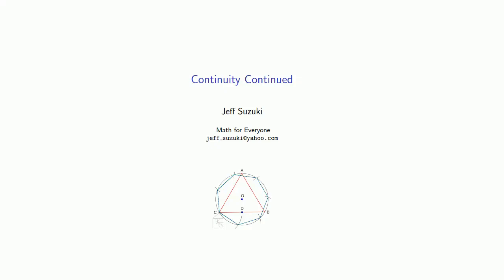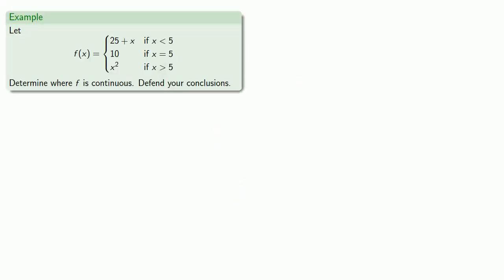So let's check a couple of functions for continuity. Let f of x be some function defined piecewise. And note that we have three different rules depending on where we are. If x is less than 5, we use the rule 25 plus x. If x equals 5, we use the rule 10. And if x is greater than 5, we use the rule x squared.